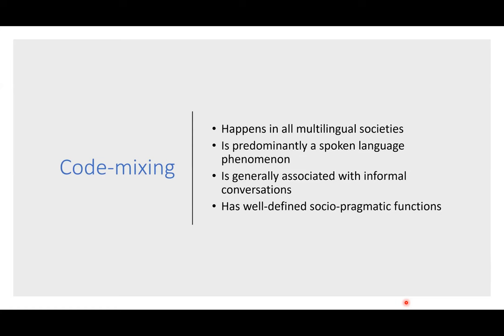Some important things to know about code mixing: one is it happens in all multilingual societies — it's almost given that if it's a multilingual society, people are going to mix languages, and this is empirically known. It's predominantly a spoken language phenomenon, so usually people don't write code-mixed text. However, this has been changing recently. It's associated with informal conversations, but since we do a lot of informal conversations in textual mode these days — like chats on WhatsApp, on social media like Facebook or Twitter, or comments on YouTube videos — you will see people are rampantly code mixing. That's why it's important to process code mixing, especially if you are processing any social media data coming from a multilingual geography.